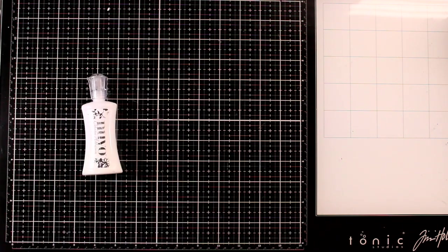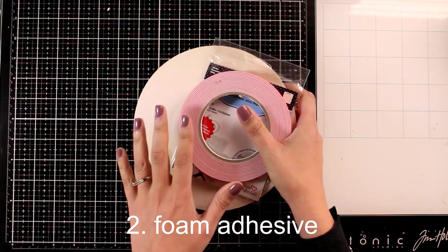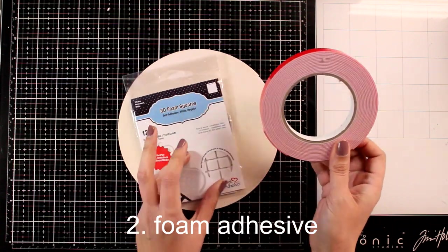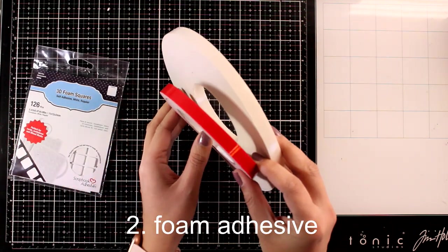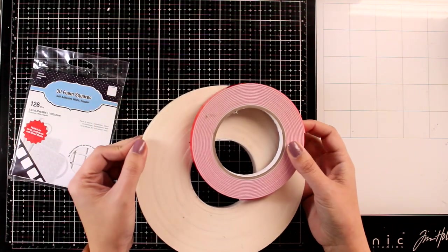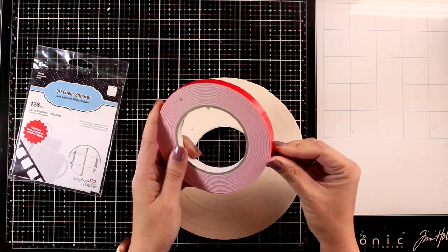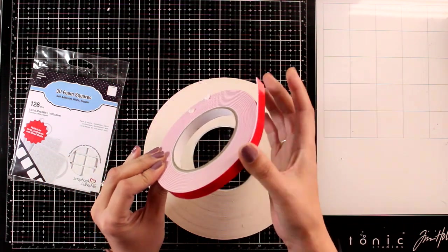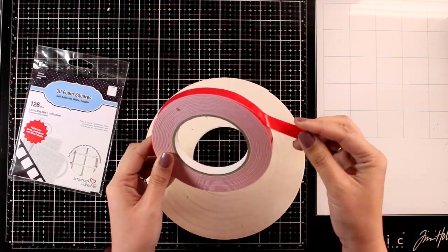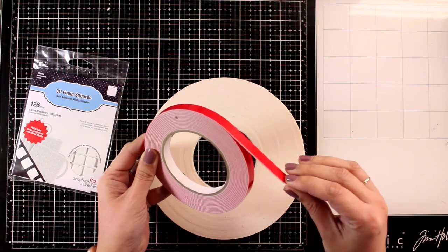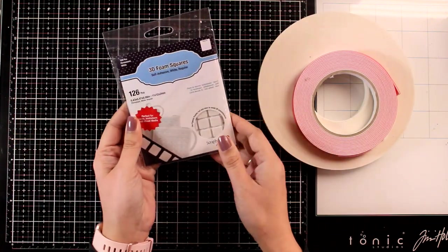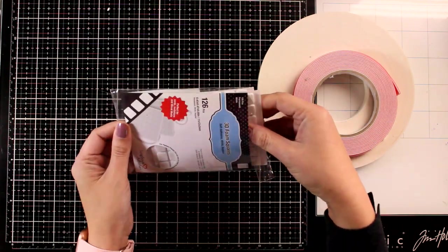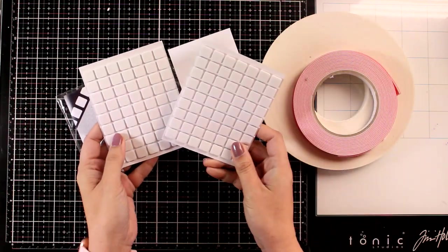Moving on to adhesives, I absolutely love adding dimension on my cards. I like to stock up when it's Black Friday on big rolls of foam tape. I mainly use this one with the red tape. You get 36 yards of this roll for $14. I also like to stock up on these handy little foam squares.